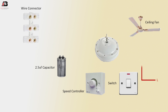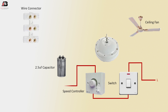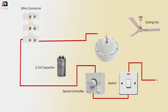Phase connection to switch. Phase connection outgoing from switch to speed controller. Phase connection outgoing from speed controller to wire connector. Phase connection outgoing from wire connector to fan. Phase connection outgoing from wire connector to capacitor.